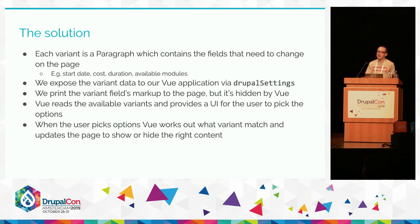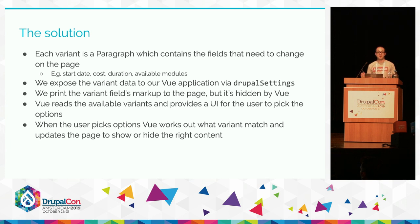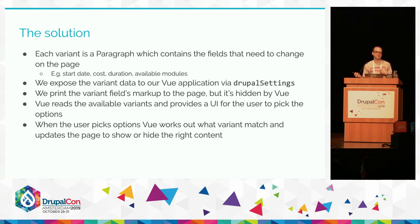On the Drupal side: we have a content type for courses with all the usual fields. Anything static that stays the same between variants is just a regular field. Then we have a paragraph field containing all our variants — full-time, part-time, different start dates, and so on. We exposed the variant data to our Vue application through Drupal settings. We also have a custom Twig macro that prints variant fields with a wrapping element which Vue uses to control visibility. All the data is actually on the page and Drupal prints it there — we primarily use Vue to control visibility, update the URL with query string parameters for sharing, allow users to copy application codes to clipboard, and other things.